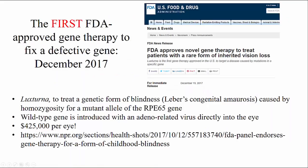More recently, the very first gene therapy approved by the FDA to fix a defective gene was approved in December 2017. The name of this is Luxturna, and it is a treatment to fix a genetic form of blindness called Leber's congenital amaurosis. It's a mutation where you have two mutant copies of the gene RPE65. The wild-type gene is introduced into the eye with an adeno-associated virus injected directly into the eye. It is ridiculously expensive — $425,000 per eye — but is thought to be a permanent fix to this progressive blindness.